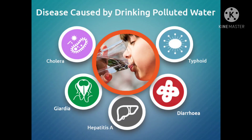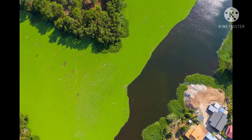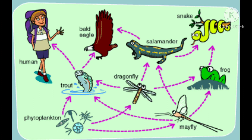The impacts that water pollution has on ecosystems include: disease caused by drinking polluted water, ruination of the ecosystem, eutrophication, and adverse impact on the food chain.